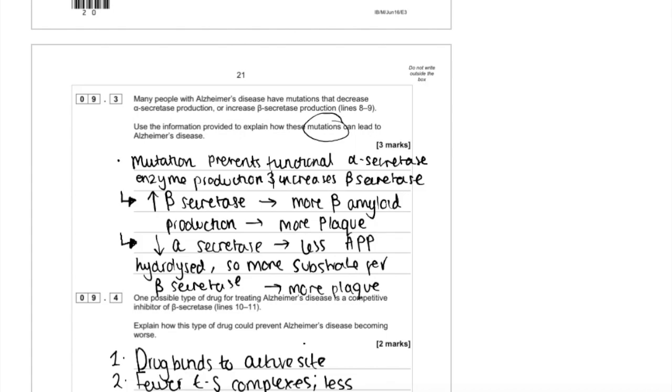You could have just said that, but you could have also gone down the alpha secretase route. If there's less alpha secretase, there's more of this substrate, the amyloid precursor protein hydrolyzed, more of it left. So again, more substrate for beta secretase, more plaque. I'll show you the mark scheme.